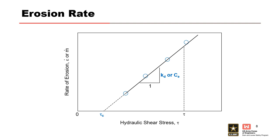For some soils, the rate of erosion per unit area is approximately linearly proportional to the level of shear stress. As shown by the plot, the slope of the best fit straight line that approximates the linear relationship represents the normalized rate of erosion per unit area, which is K sub D or C sub E.